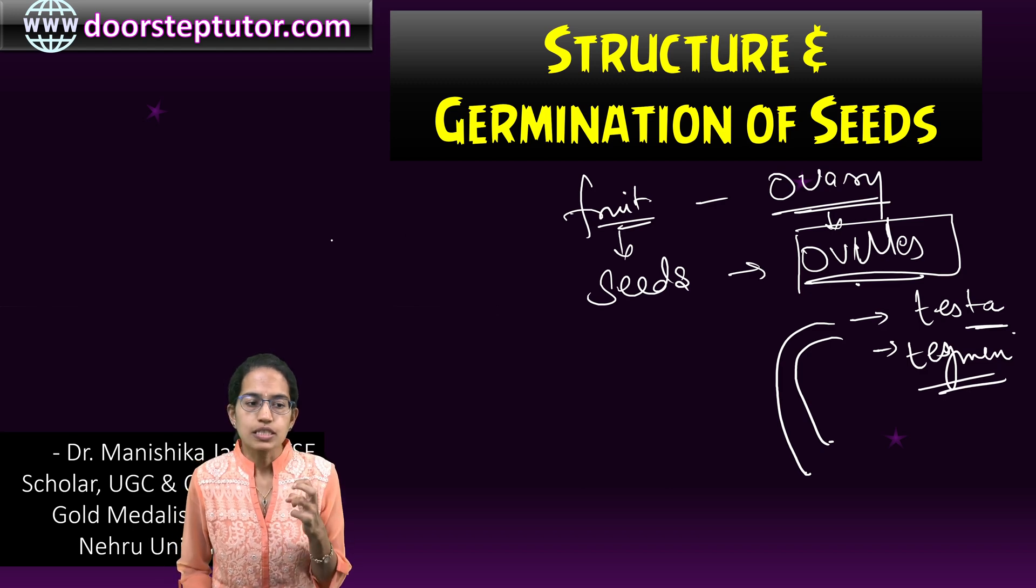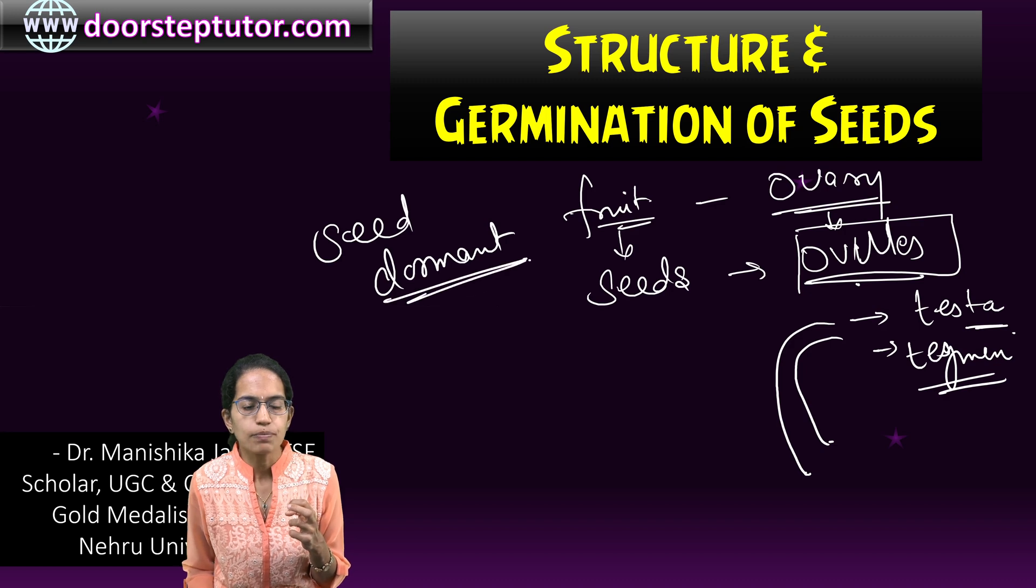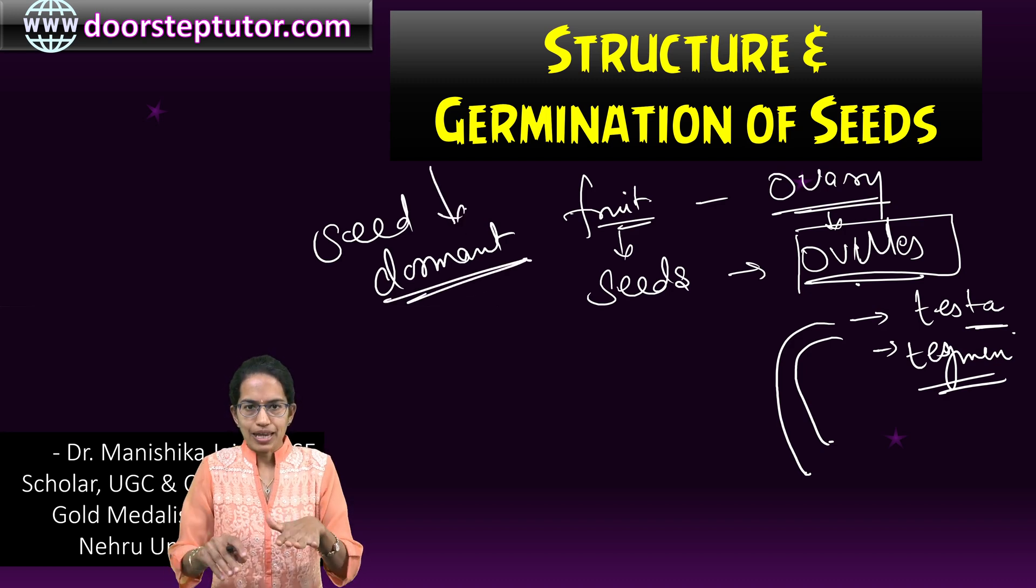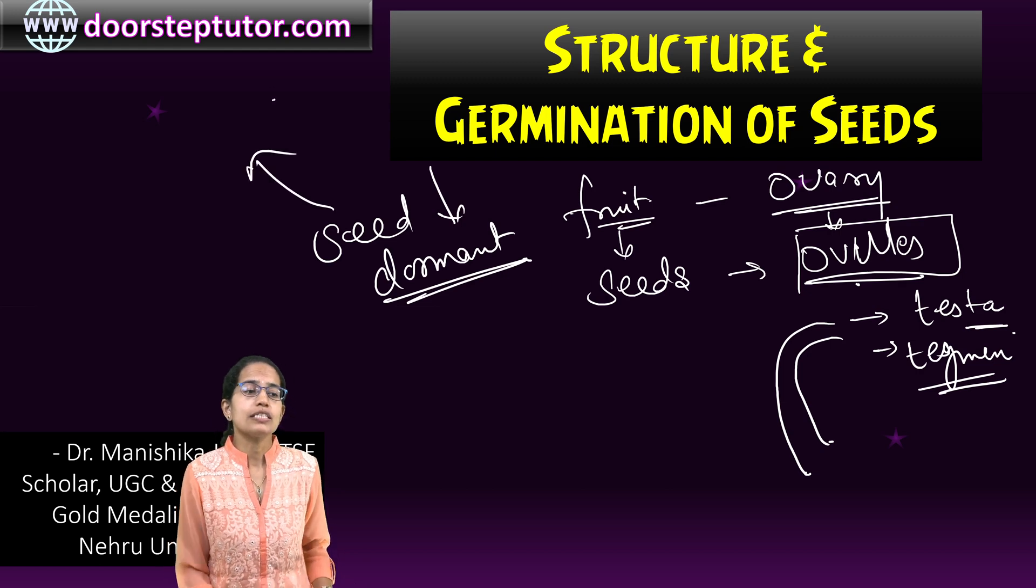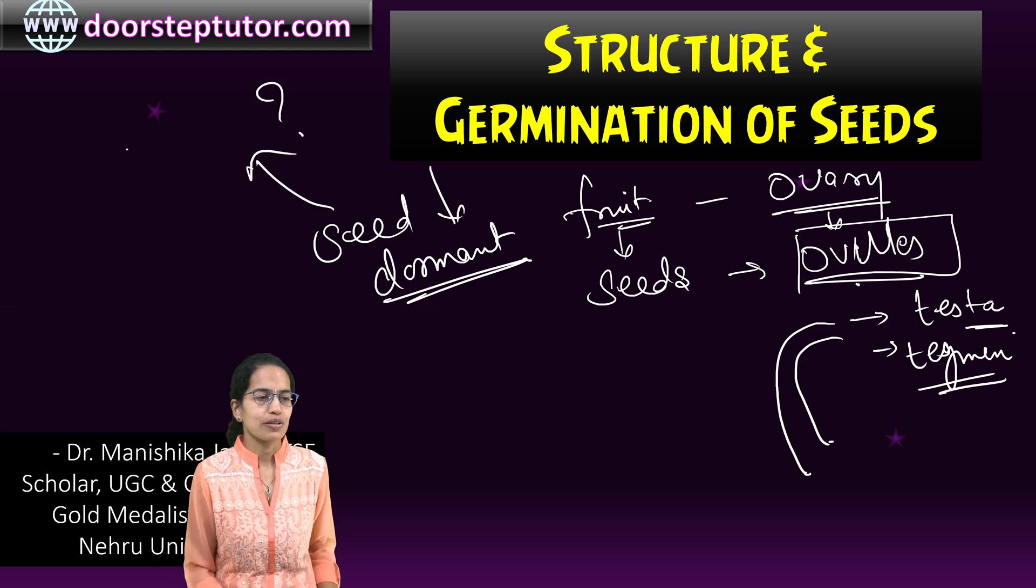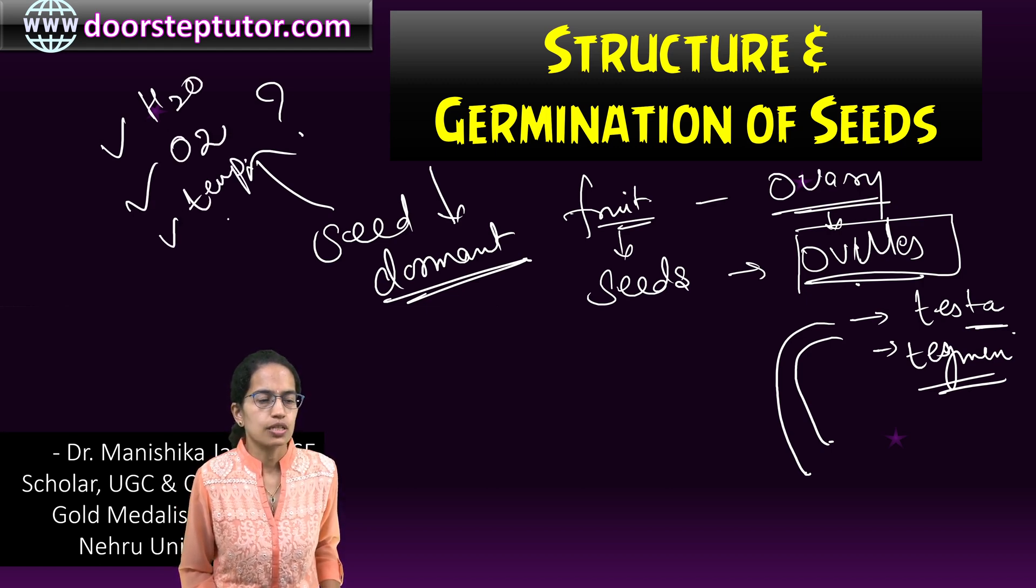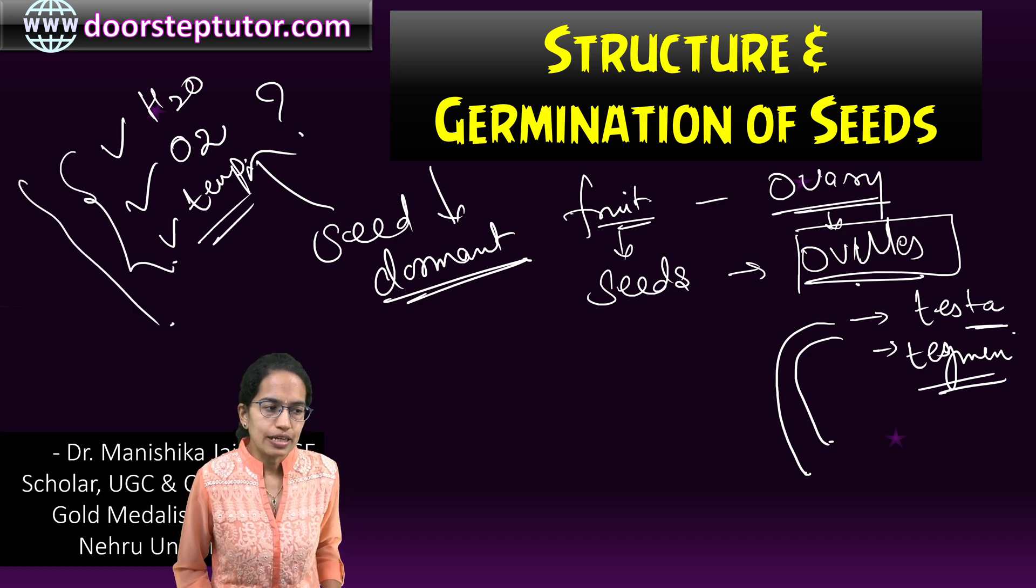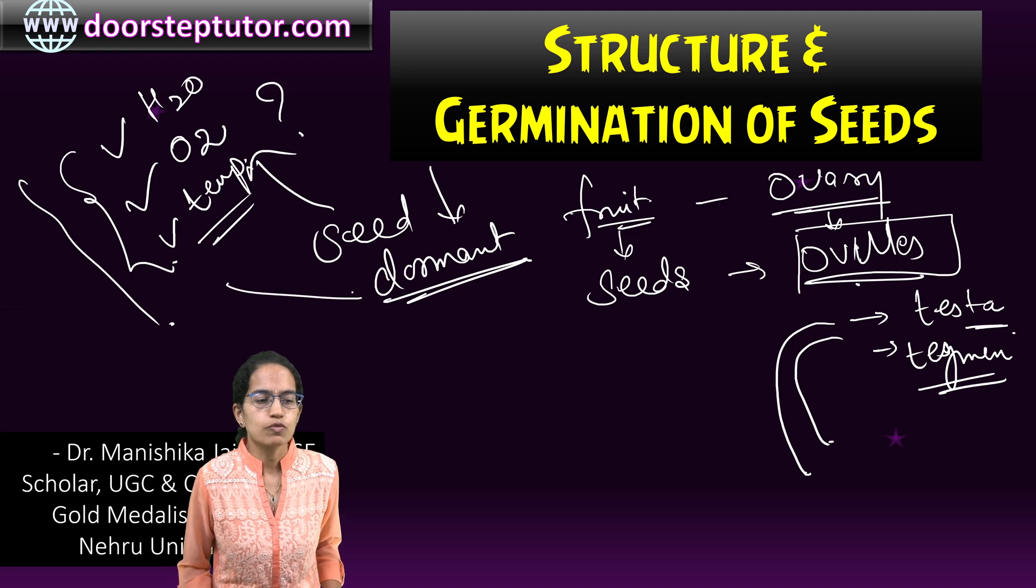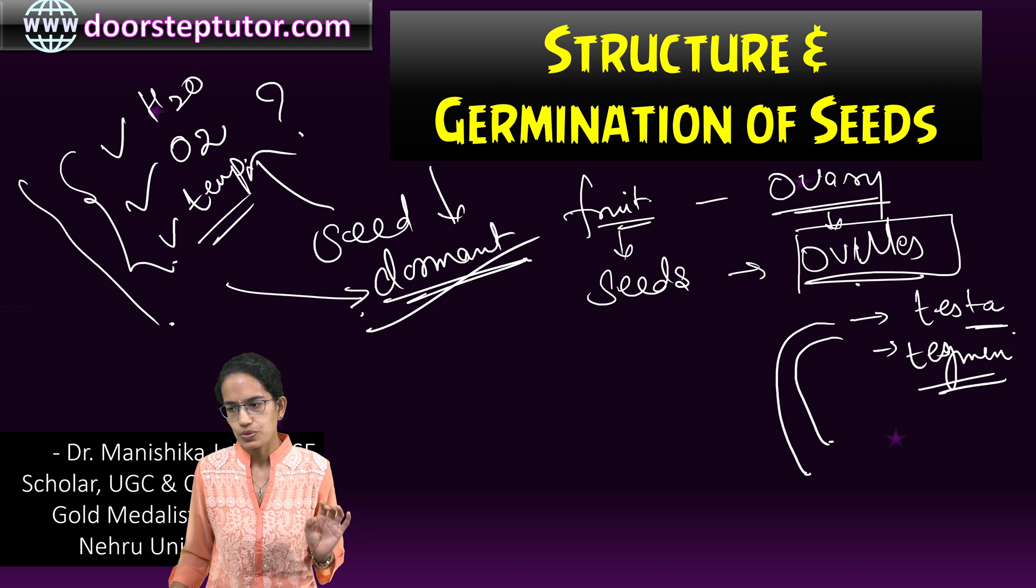Now seeds do remain dormant for a duration. Dormant means they remain inactive but when would these seeds germinate? When they get optimum water, optimum oxygen and optimum temperature, these seeds would germinate. Till the time these are not found, the seed would remain in the state of dormancy. Extremely important to note.